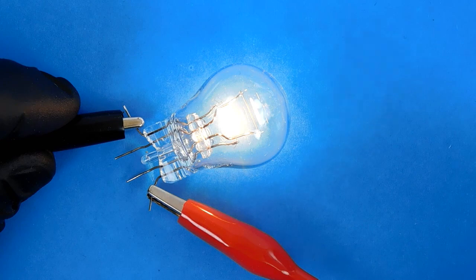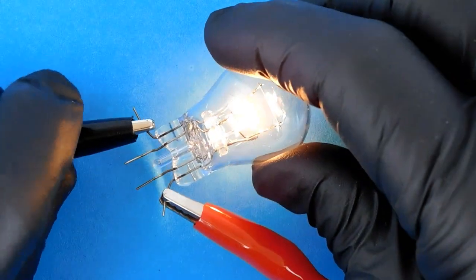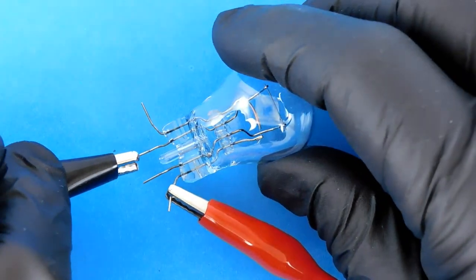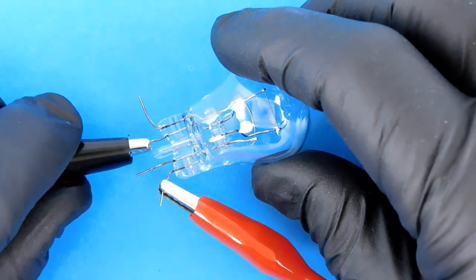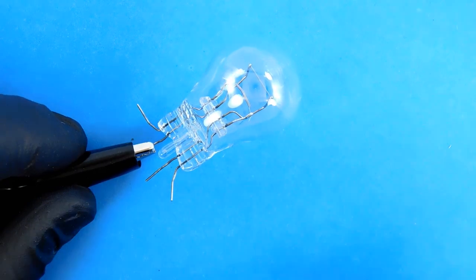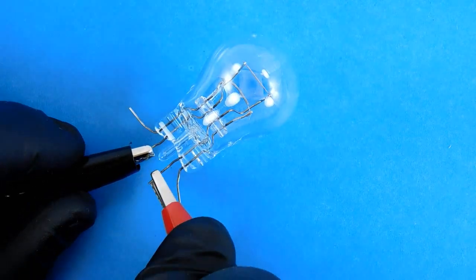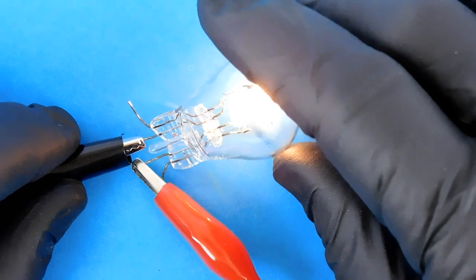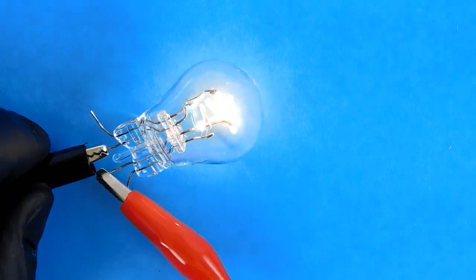Now I'm going to light the upper filament, the smaller filament. I'm going to move my ground to one side of the upper filament, and I'm going to move my plus 12 volts DC to the other side of the upper filament, and you see now that it is also lit.